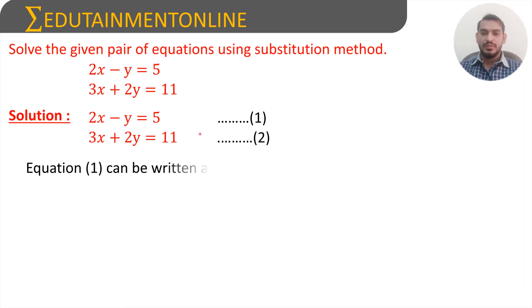From the first equation, 2x minus y equals 5, it can be rewritten as y equals 2x minus 5.